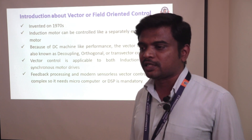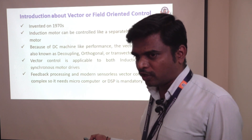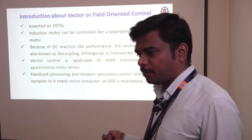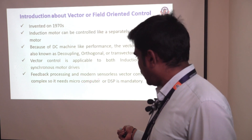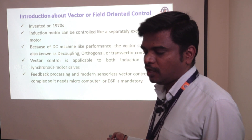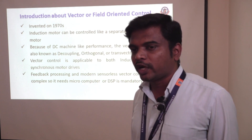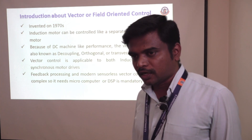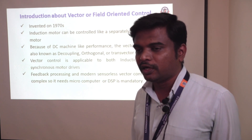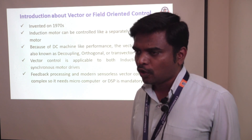The major concern with vector control is its complex implementation, because it needs a feedback processing unit combined with a control block, and requires a separate microcomputer and also a DSP for implementation. This is the major drawback. However, the major advantage is that speed control will be accurate and it can be implemented in many industries like the paper industry and textile industry, where precise speed control is needed.